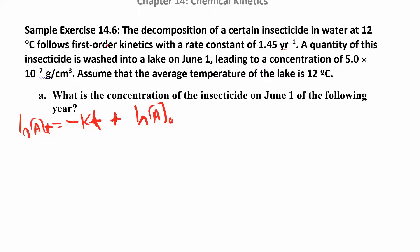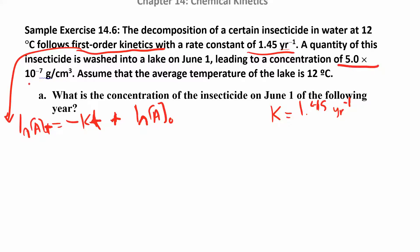The problem: decomposition of a certain insecticide in water at 12°C follows first-order kinetics. First-order means we use this equation. They give us a rate constant K = 1.45 years⁻¹. A quantity of the insecticide is washed into a lake on June 1st, leading to an initial concentration of 5.0 × 10⁻⁷ g/cm³. You can have these non-molar units — whatever units your initial concentration is in, that's what you'll get for the final concentration.